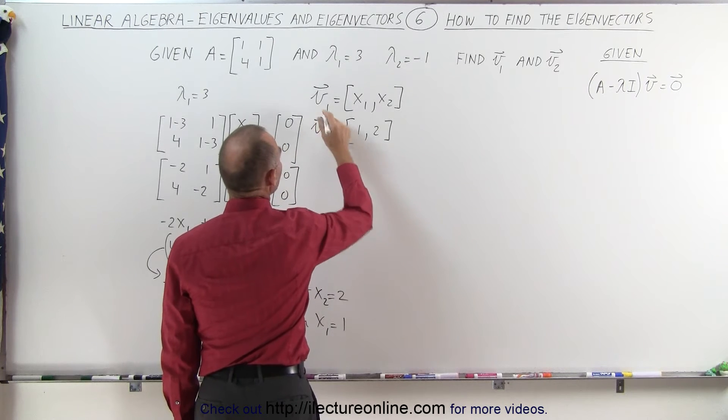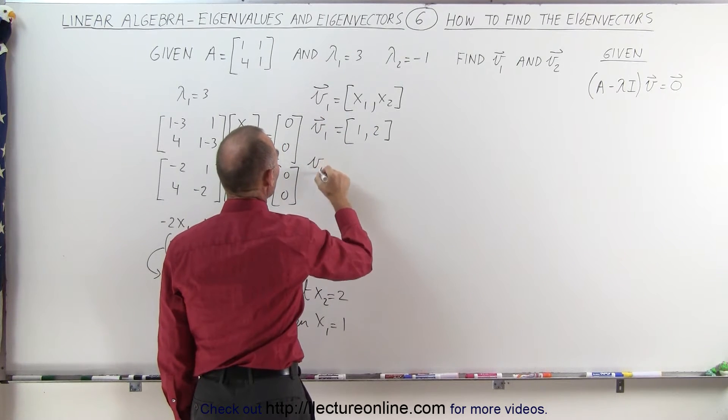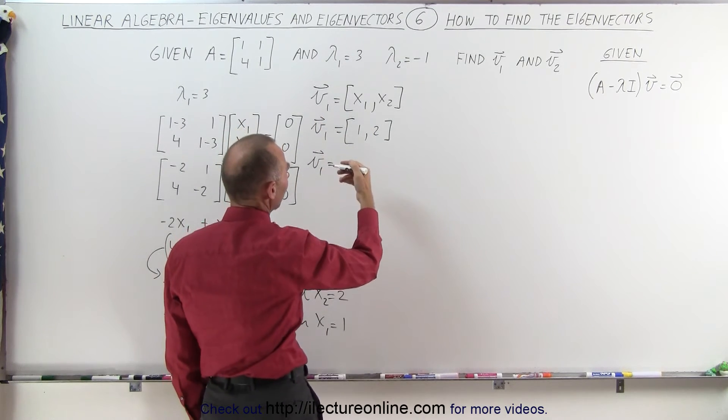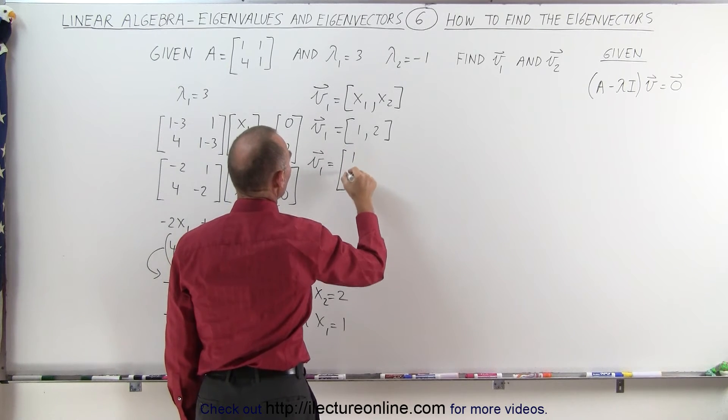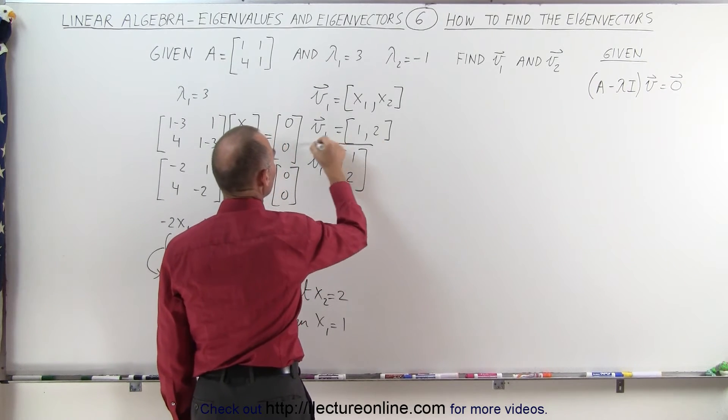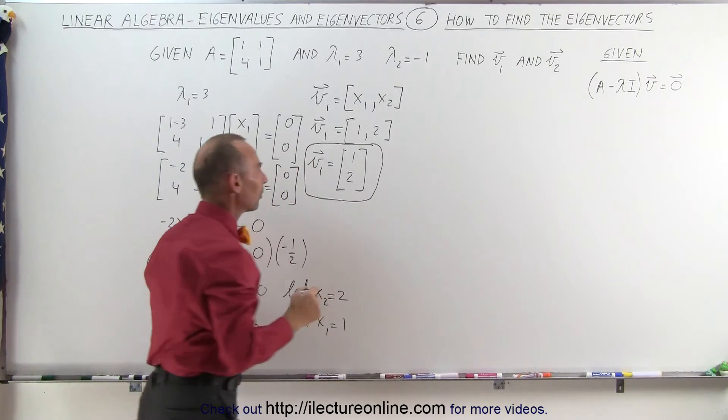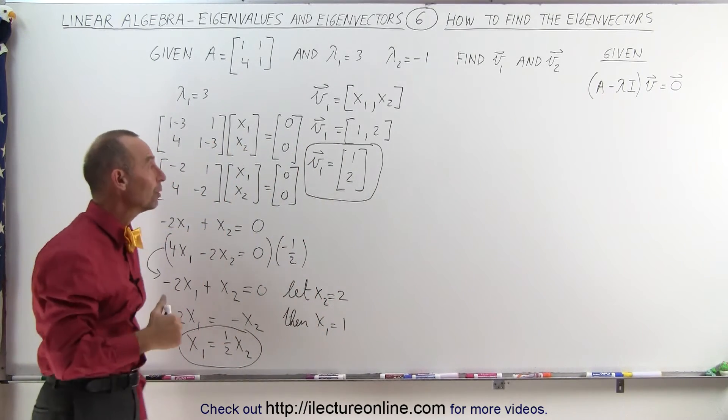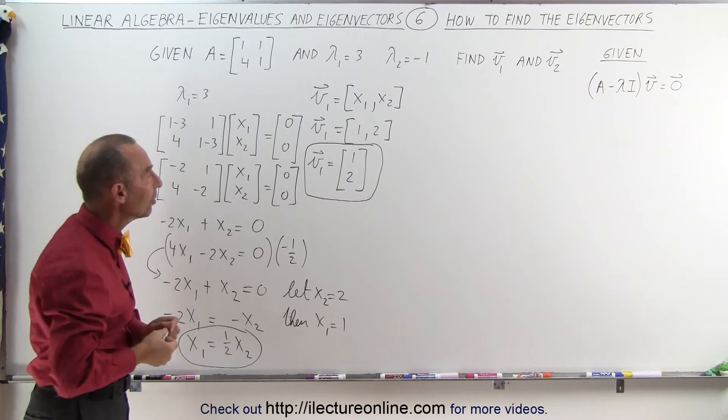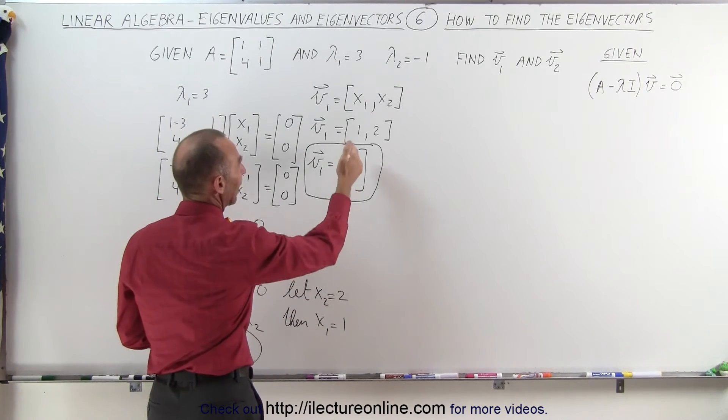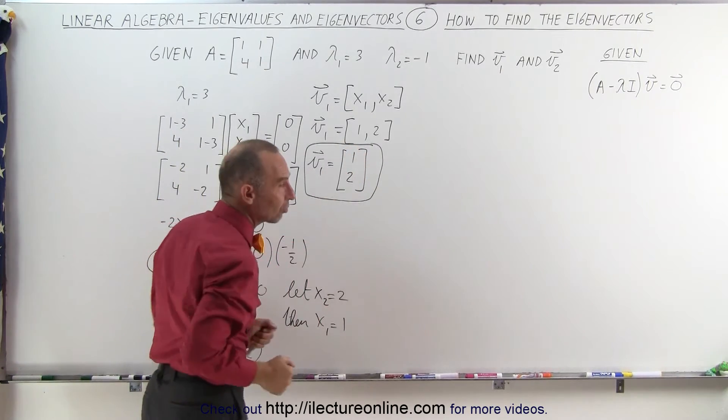It's commonly done that we do it vertically, so we can say my first eigenvector can be written as 1 and 2, representing the relationship between those two variables. So what that means is, if I have a value for x1, I know x2 will be twice as large.